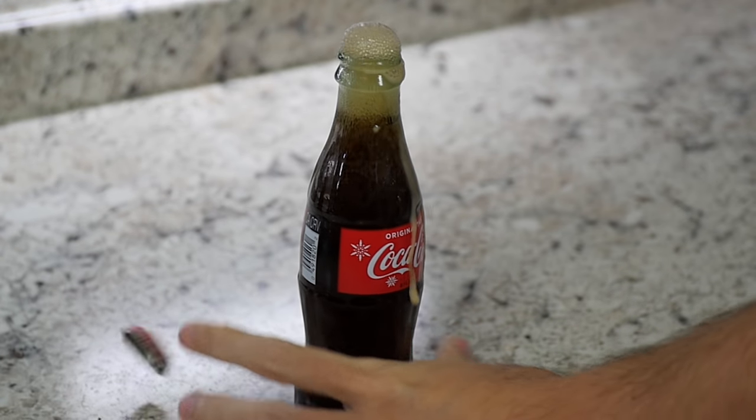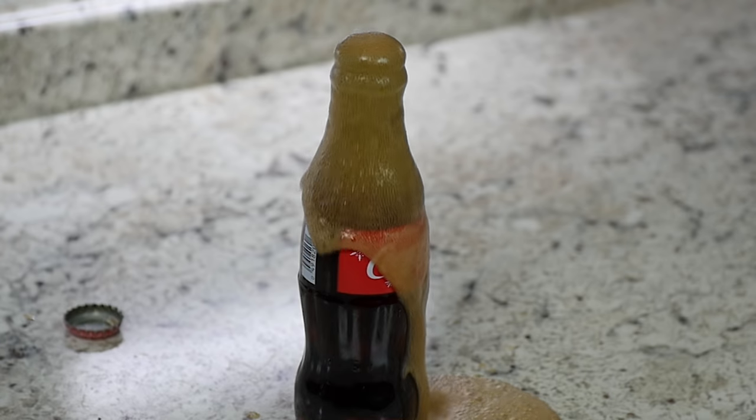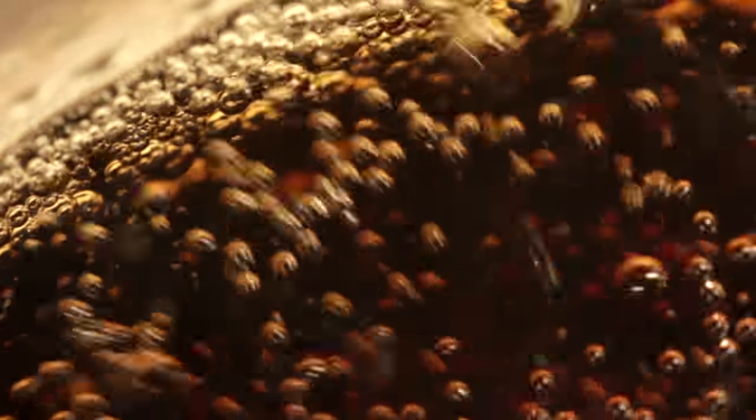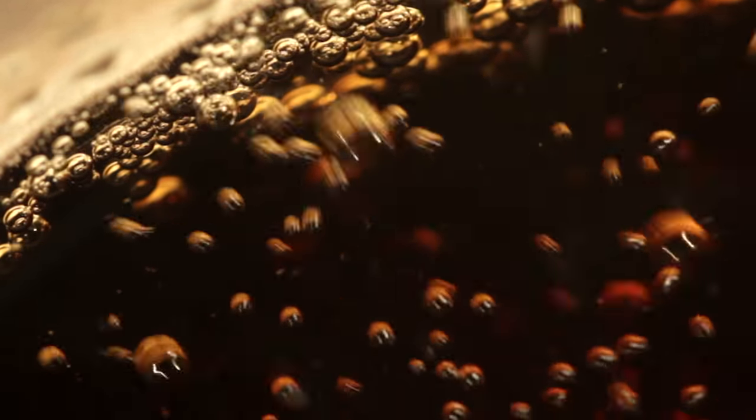When the can is opened and the high pressure thus removed, these bubbles rapidly expand and shoot to the top of the container, pushing out some of the liquid with them. Thus the hypothesis is that by tapping on the can, you can dislodge these bubbles and cause them to float to the top before opening the container, so that when you do open the can, the gas can expand and escape without taking any liquid with it. Seems reasonable enough, but does this actually work?